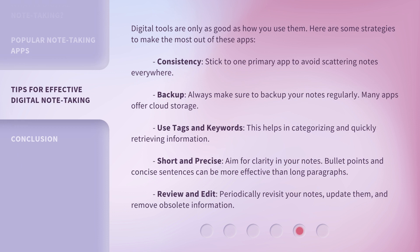Digital tools are only as good as how you use them. Here are some strategies to make the most out of these apps. Consistency — stick to one primary app to avoid scattering notes everywhere. Backup — always make sure to back up your notes regularly; many apps offer cloud storage. Use tags and keywords to help categorize and quickly retrieve information. Keep notes short and precise — aim for clarity, using bullet points and concise sentences rather than long paragraphs.